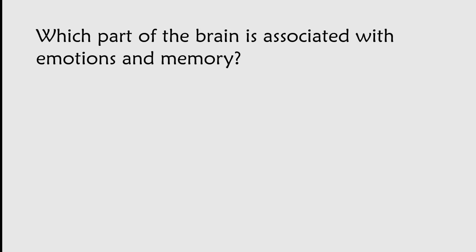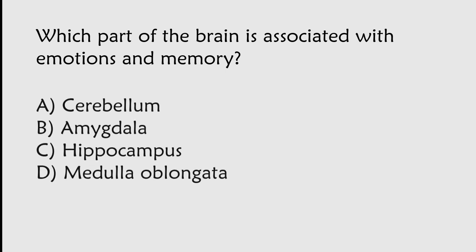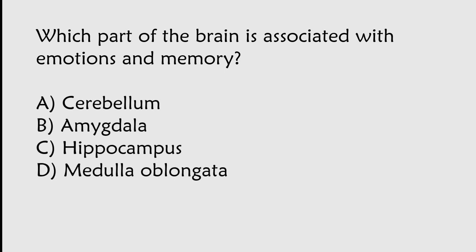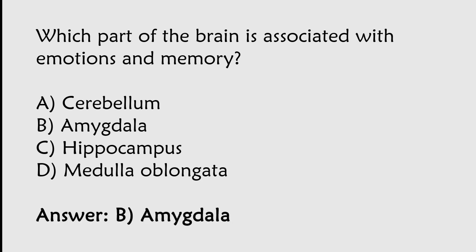Which part of the brain is associated with emotions and memory? Options: Cerebellum, Amygdala, Hippocampus, Medulla oblongata. The correct answer is Option B. The amygdala is the part of the brain associated with emotions and memory.